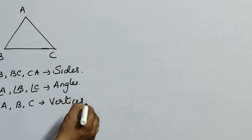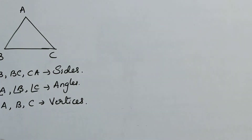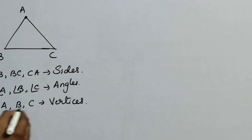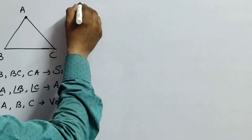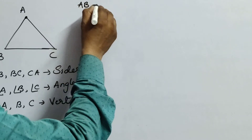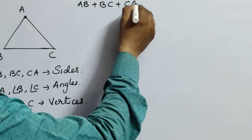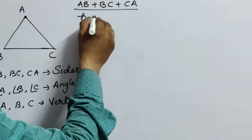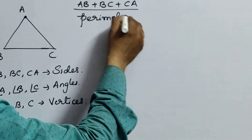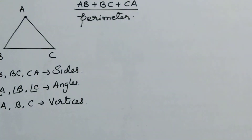You are very much aware of vertices. A individually is called vertex — that means singular. Vertices means it is plural. Now, the sum of all the sides of a triangle, that is AB plus BC plus CA, is the sum of all the sides. So, sum of all the sides of a triangle is called perimeter.